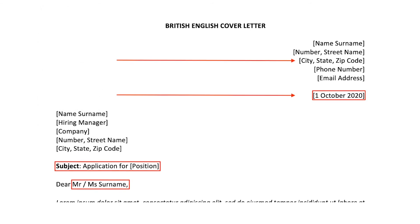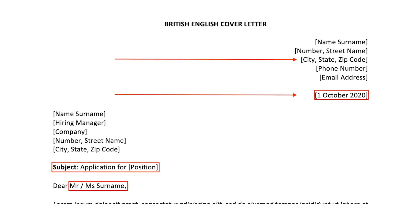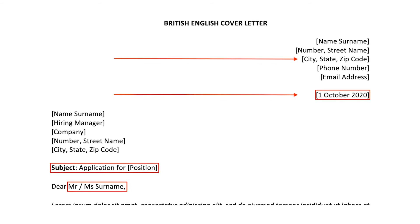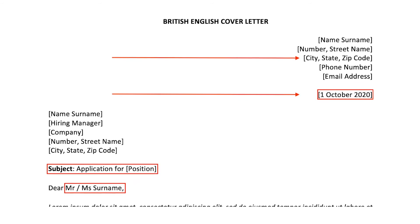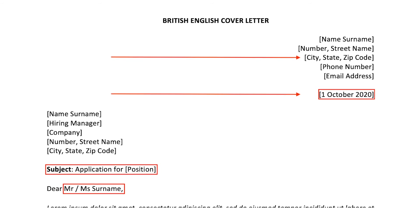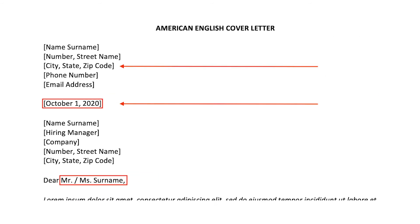For British English, you need to put the contact information and date on the right side. You need to put the day first, then the month, and exclude the comma. We also notice that the subject line is included in the British English letter. It is commonly used in the UK, but usually left out in the US. For American usage, the month is placed first, followed by the date, and you need to insert a comma between the day and year. For abbreviations like Mr. or Ms., include a dot in American English; for British English, you can leave it out.